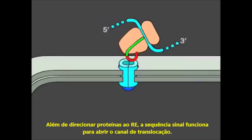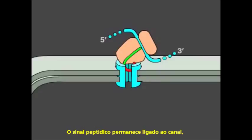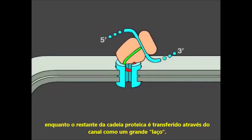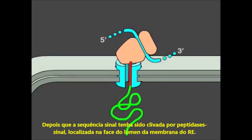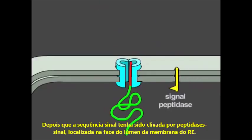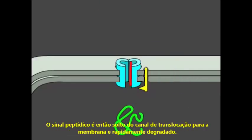In addition to directing proteins to the ER, the signal sequence functions to open the translocation channel. The signal peptide remains bound to the channel, while the rest of the protein chain is threaded through the membrane as a large loop. Once the protein has passed through the membrane, it is released into the ER lumen, after the signal sequence has been cleaved off by a signal peptidase located on the luminal side of the ER membrane.